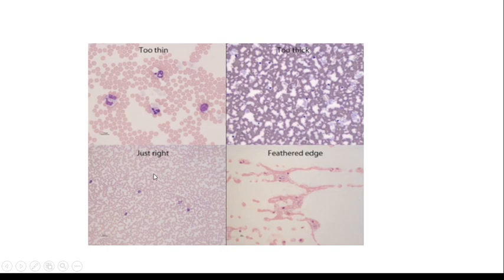In the lower left corner, the film is suitable for counting. Here, the red blood cells are in monolayer. Lastly, the lower right corner, feathered edge. We don't use this area to count cells.